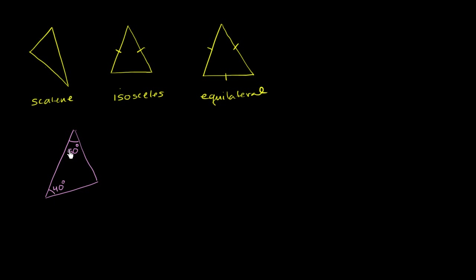The key here is that if you know two interior angles of a triangle, you can always figure out the third, because the three need to add up to 180 degrees. So if this is 40 and that is 50, these two add up to 90, so to add up to 180 degrees, this one must be a 90 degree angle — a right angle. And if all three interior angles are different, that means all of the side lengths are going to be different.